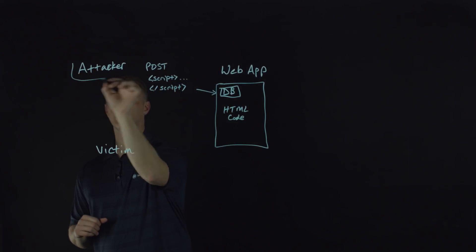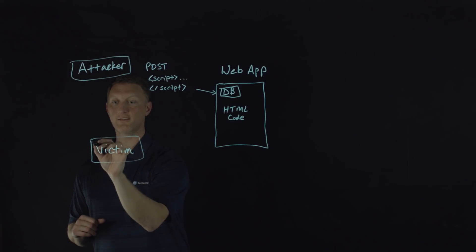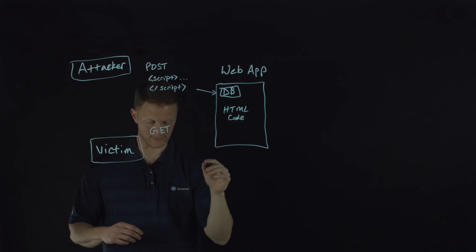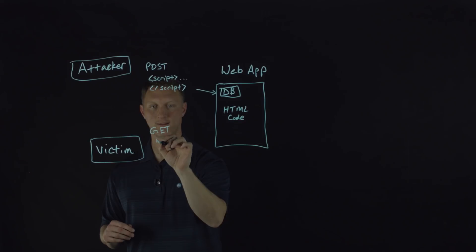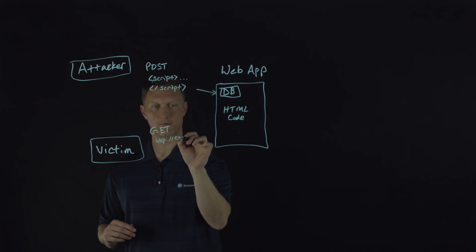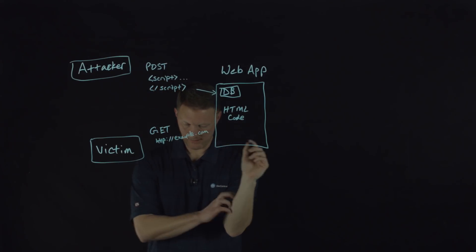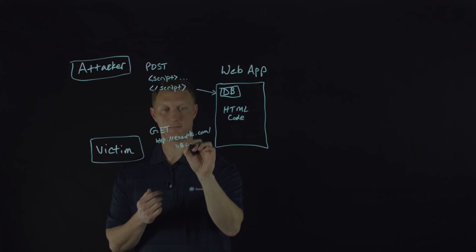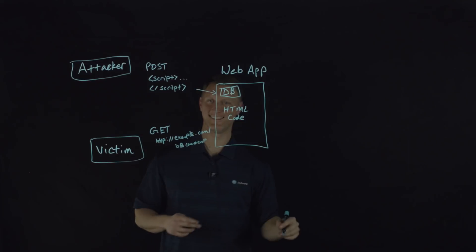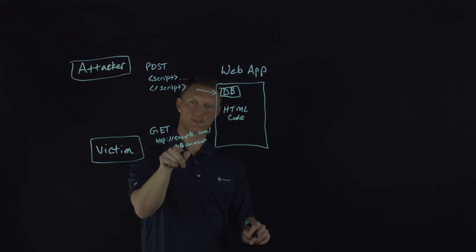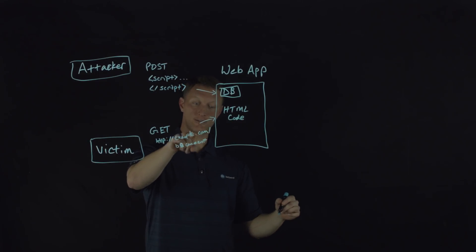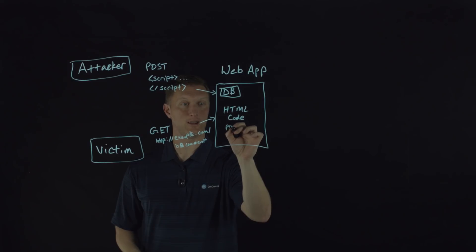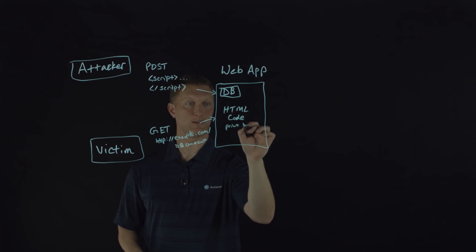What the victim is going to do is send a GET request to this web application — something like HTTP example.com/DB_comment. That is trying to say: hey, I want the latest comment from the database. Then this HTML code is going to print the DB comment and send that back with a 200 OK, because the victim has requested a valid page. Along with the 200 OK it sends the contents of this HTML code, which includes the latest DB comment.